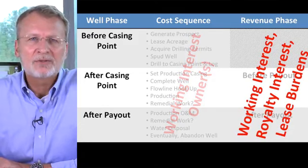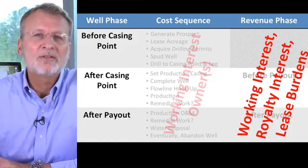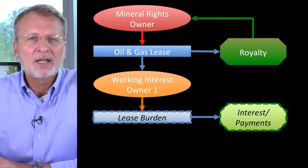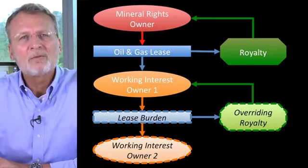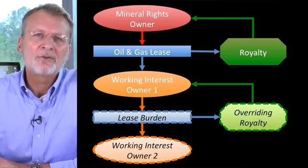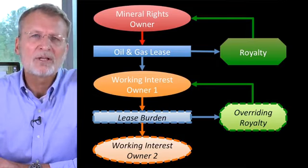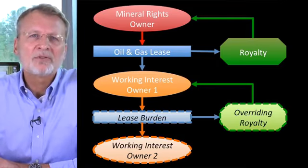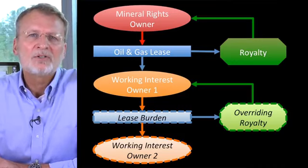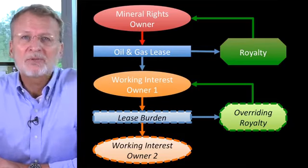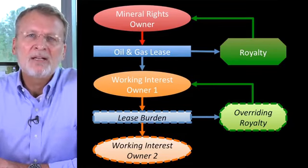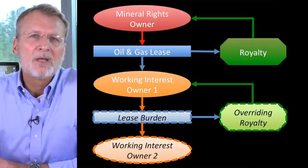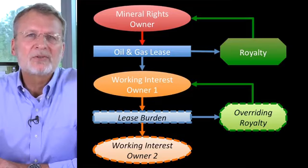If there are any additional burdens on the lease, a fraction of the revenues are also directed towards these burdens. Lease burdens are additional revenue obligations to other parties that may be involved in the lease structure. A common example is an overriding royalty interest. This is created, for example, when the first working interest owner passes their lease on to a second working interest owner. This second owner takes over the privileges and responsibilities of the original lease. In return, they provide, among other possible forms of compensation, a cost-free royalty paid to the first working interest owner from any oil and gas revenues they produce. Note that this second overriding royalty is in addition to the royalty that the second working interest owner must pay the mineral rights owner.